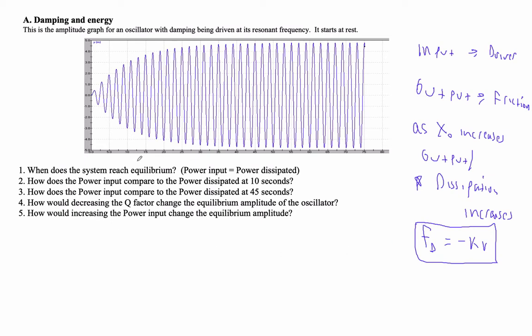So when does the system reach equilibrium? Well, it's going to reach equilibrium when the amplitude quits increasing. Because if the power input is bigger than the power dissipated, which it is at first, the amplitude increases. So where does this amplitude stop increasing? Right around 35 seconds-ish. 35 seconds or so.